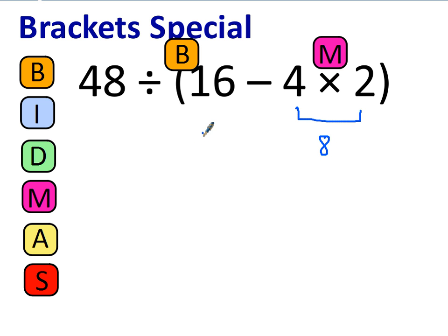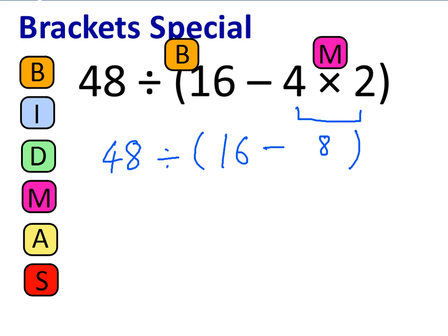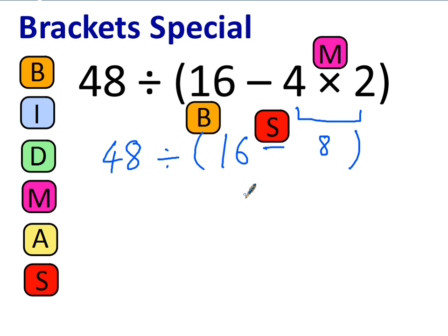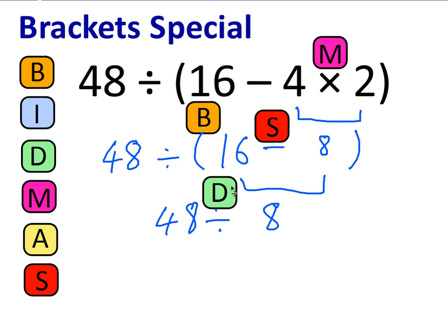Now I can rewrite the brackets bit: 16 take away 8, and rewrite the bit outside the brackets. We've still got brackets, and now inside the brackets we've got a subtraction — 16 take away 8 gives you 8. And outside the brackets we had 48 divided by 8. We've only got the division left to do: 48 divided by 8 is 6.